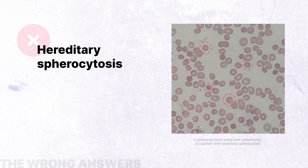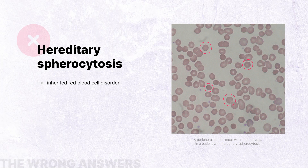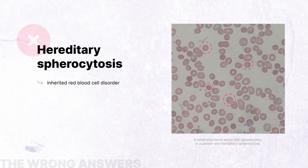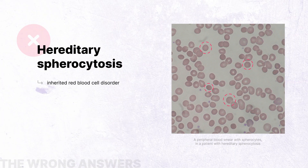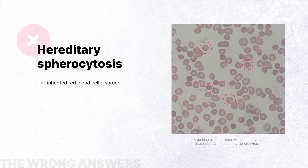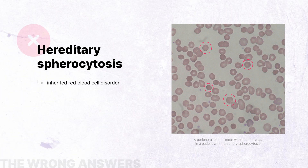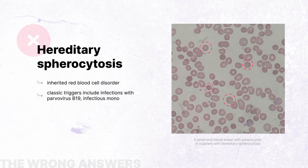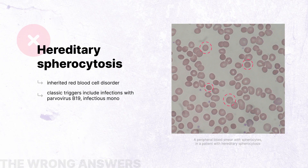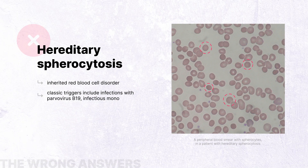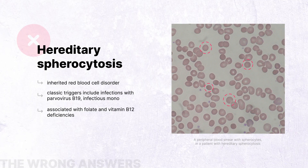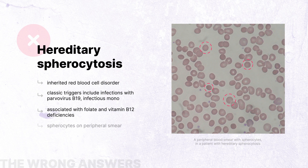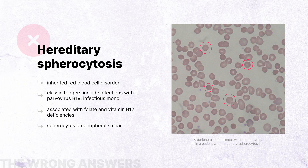Hereditary spherocytosis is another cause of hemolytic anemia, caused by a familial red blood cell disorder with various degrees of severity. Similar to G6PD deficiency, patients have known exacerbations of hemolytic anemia; however, none are associated with the consumption of fava beans. Settings which lead to hemolysis include infections such as parvovirus B19, leading to aplastic anemia, infectious mononucleosis leading to splenomegaly, and deficiencies in folate and vitamin B12. Unlike G6PD deficiency, peripheral smear classically has spherocytes, not bite cells or Heinz bodies.